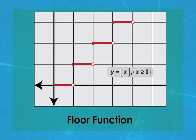So for x values between 0 and 1, but not including 1, the output value rounds down to 0. And this creates the first step in our stair step.